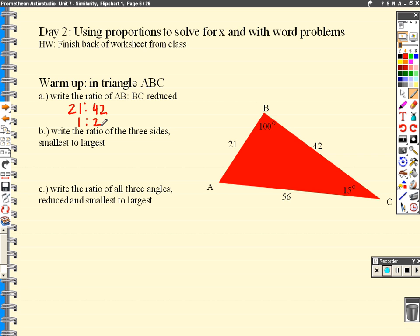Okay, what's the ratio of the three sides from smallest to largest? The smallest side I see is 21. Next I see 42. Finally 56. Now 21 does not go into all of these, but 7 does. And we need to simplify it by finding a number that goes into all of them. So 7 goes into 21 three times, 42 six times, and 56 eight times. That would be our simplified ratio.